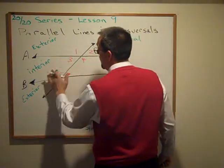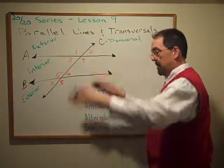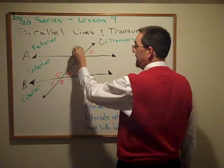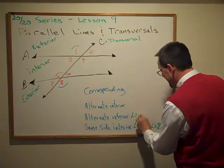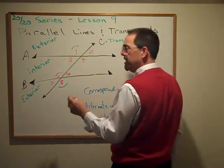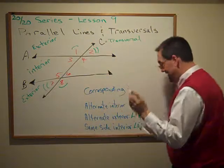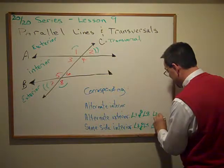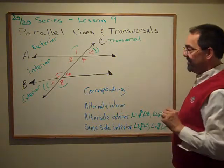Now, let's change that. Alternate exterior. One and eight. Alternate exterior. Two and seven. Good.